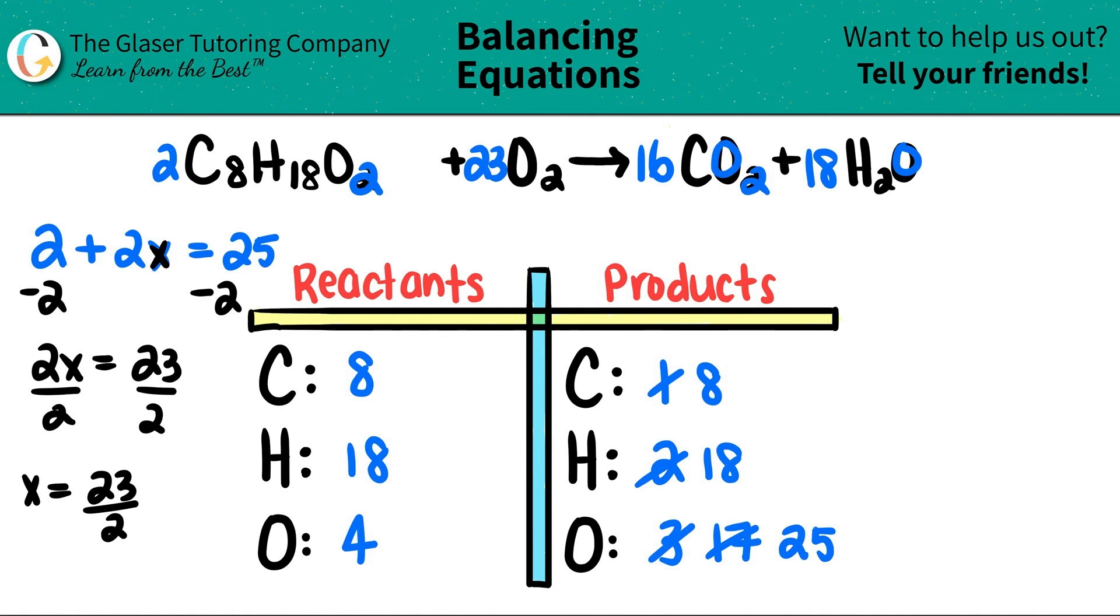Hopefully this helped. The balanced equation is 2C8H18O2 plus 23O2 yields 16CO2 plus 18H2O. Thank you so much for viewing the video. I really hope this helped. Let me know in the comments. I hope you're having a great day, and let's keep studying hard. I'll see you in the next lesson. Bye-bye.